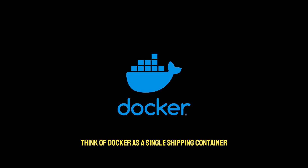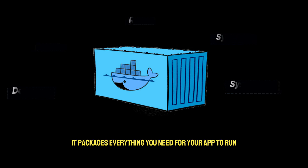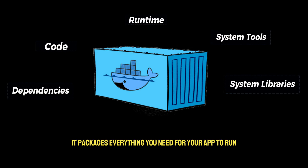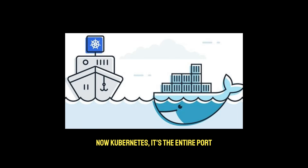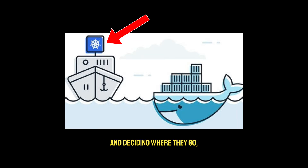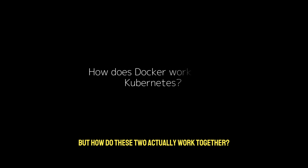Think of Docker as a single shipping container — it packages everything you need for your app to run. Kubernetes is the entire port, managing thousands of containers and deciding where they go, how they run, and what happens when something breaks. But how do these two actually work together?